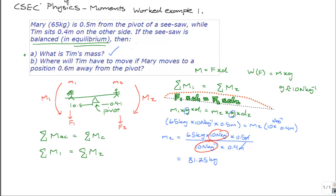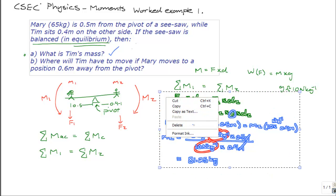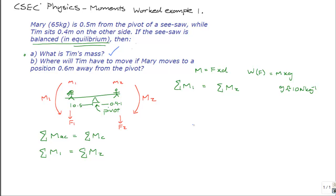So let's move on to the second part of this problem, and calculate where Tim will have to move if Mary moves to a position 0.6 meters away from the pivot. Notice that she would be moving further away from the pivot, so her turning force, her moment M1, would be expected to increase. The moment is equal to mass times gravitational acceleration times distance from the pivot. And if her distance from the pivot increases, then her overall turning force should increase as well.